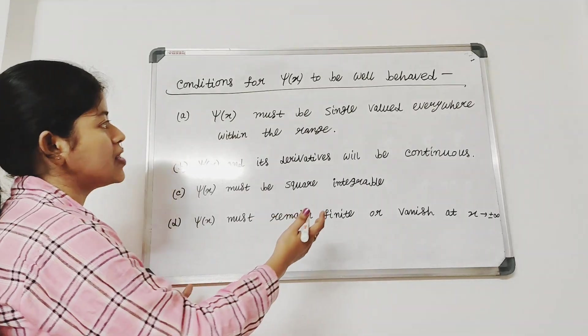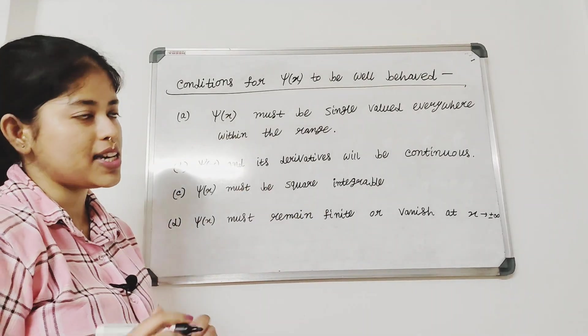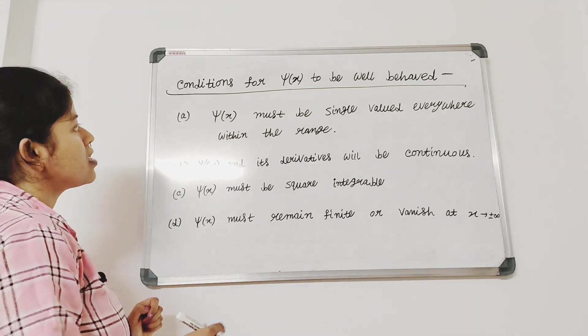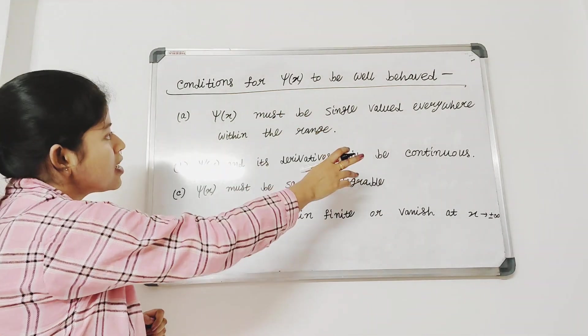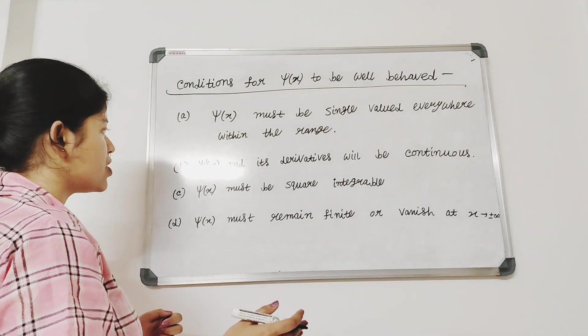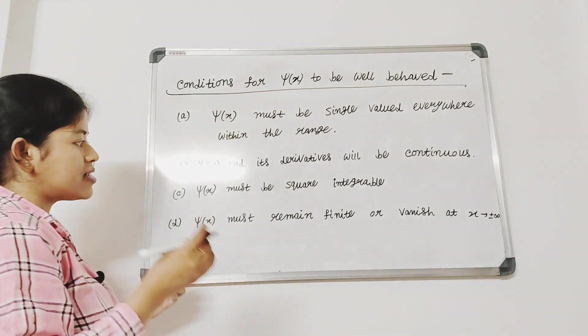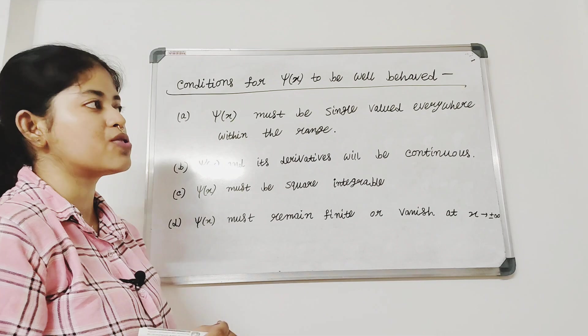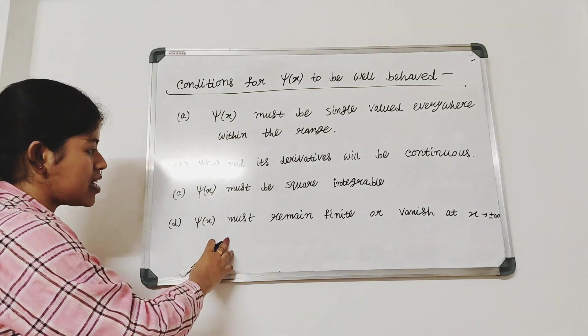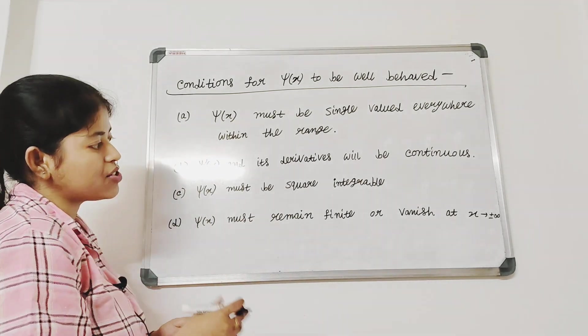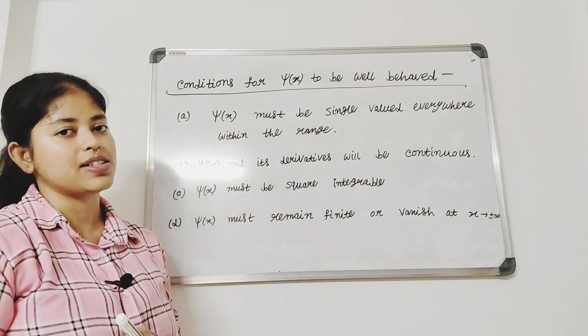A wave function psi of x is said to be well behaved if it satisfies these conditions. The conditions are psi of x must be single valued everywhere within the range, psi of x and its derivatives will be continuous, and psi of x must remain finite or vanish at x tends to plus minus infinity.